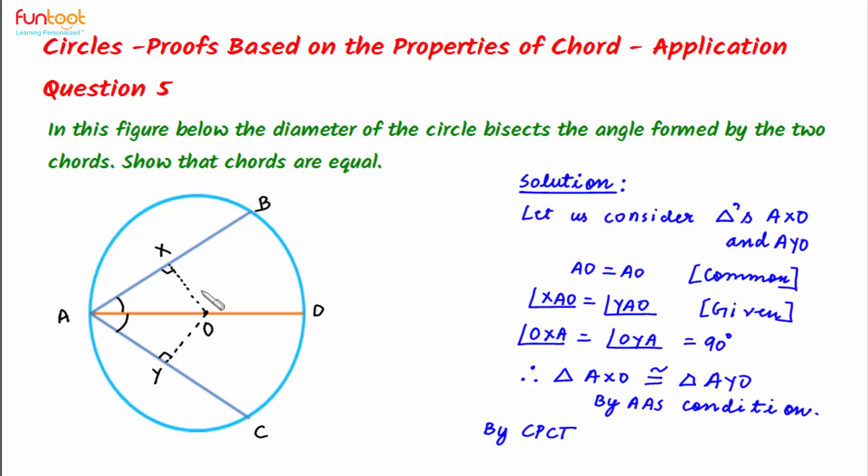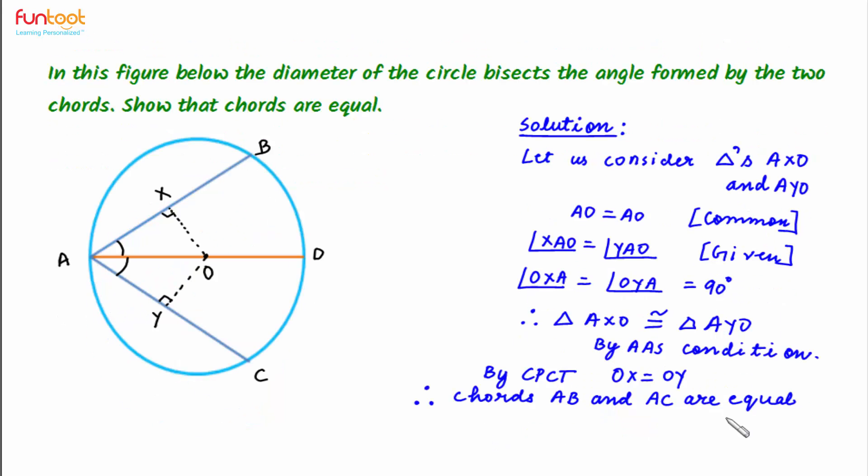By CPCT, we can say that OX is equal to OY. That means distance of the chords AB and AC from the center of the circle O is equal. Therefore, we can say that chords AB and AC are equal. So this is what we have to prove in the question.